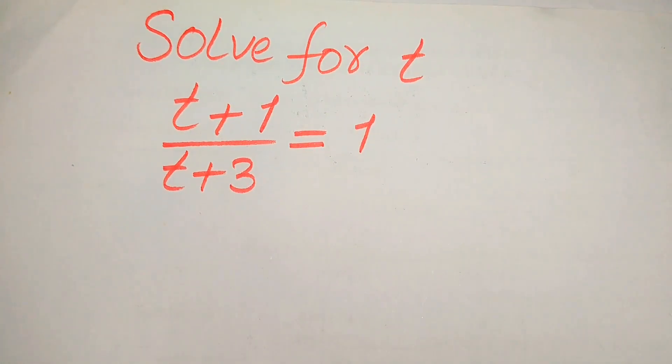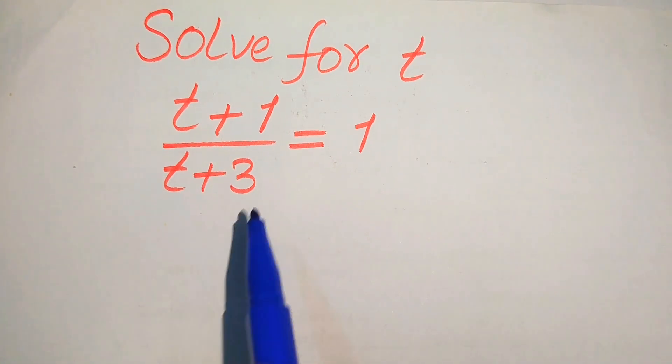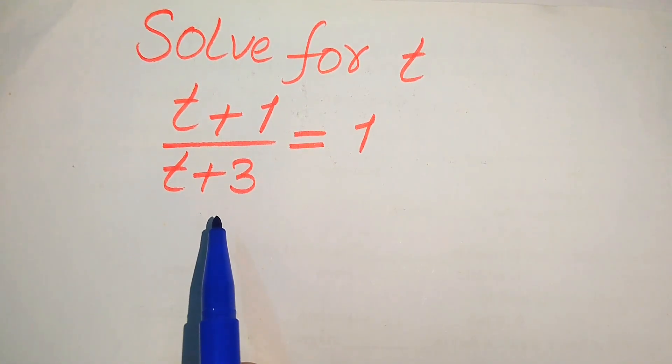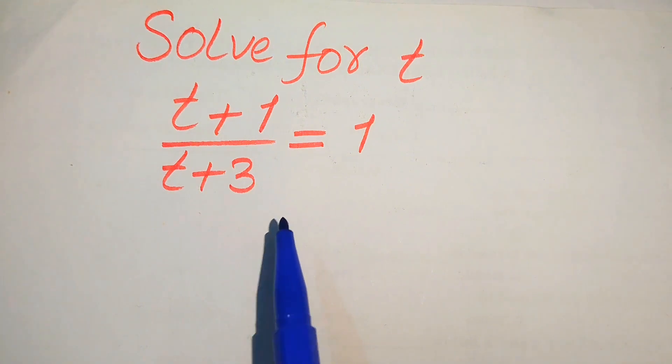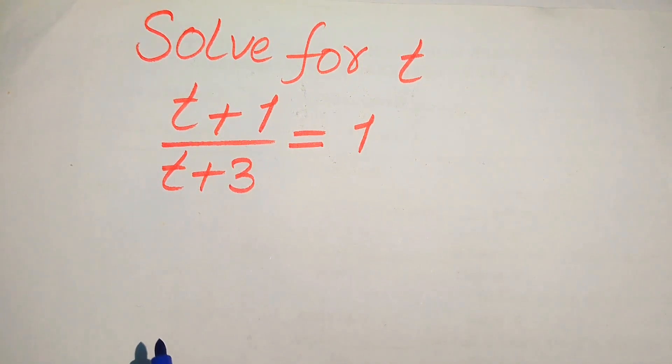Hello everyone, how to solve this problem for the values of t if we have t plus 1 divided by t plus 3 equals 1, and we solve this problem for all the values of t.